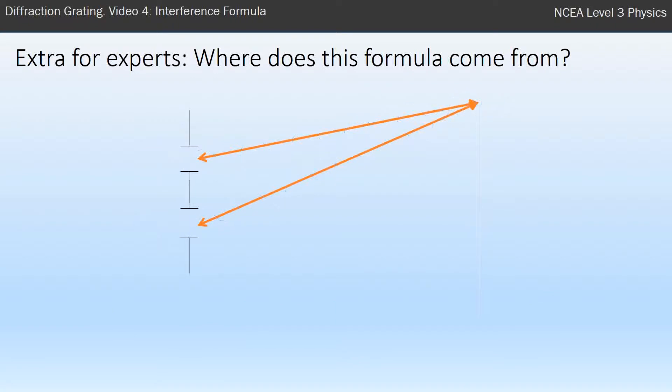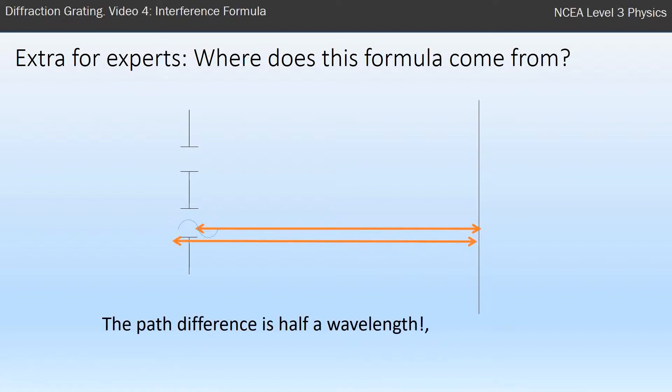I've done some quick animation here to compare the two lengths that they had to travel. So that's one length, I've just straightened it up, the other length, I'll straighten that up so we can make a good comparison, and when you put them side by side you see that one traveled further than the other, and it traveled further by exactly half a wavelength. And that's why we get destructive interference.